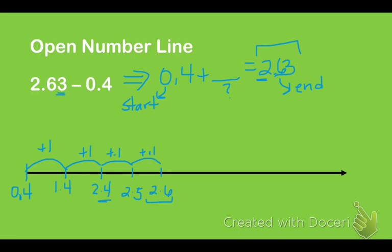That 3 is in the hundredths place, so I still need to add three hundredths. What does that look like in decimal form? 0.03 — that's three hundredths. So 2.6 plus three hundredths puts me at 2.63. I started at 0.4 and ended at 2.63.